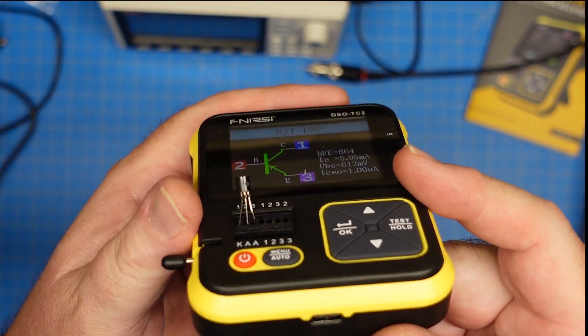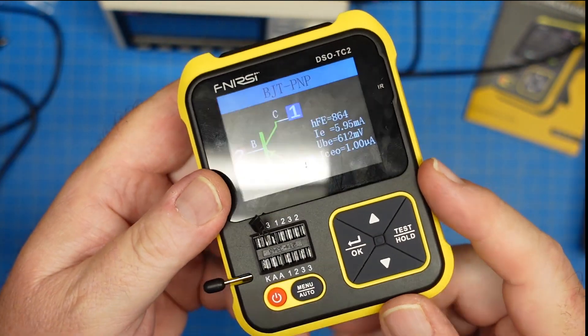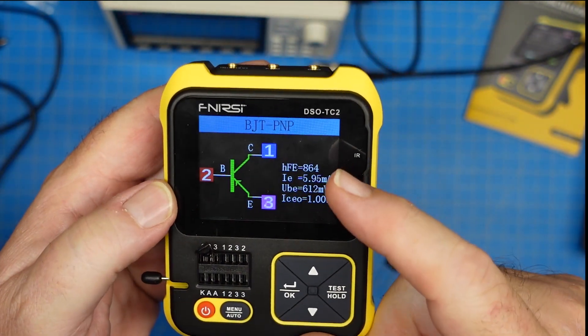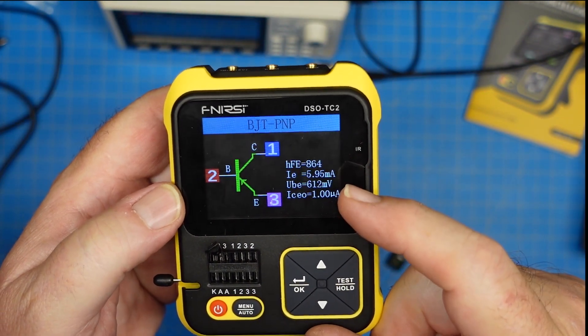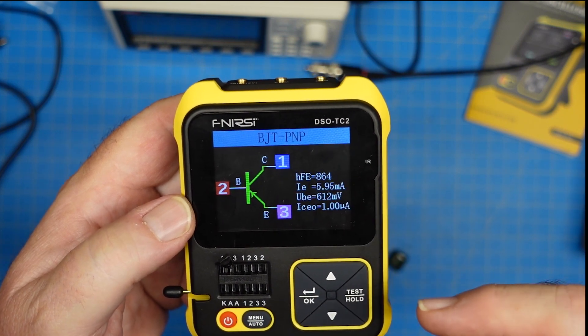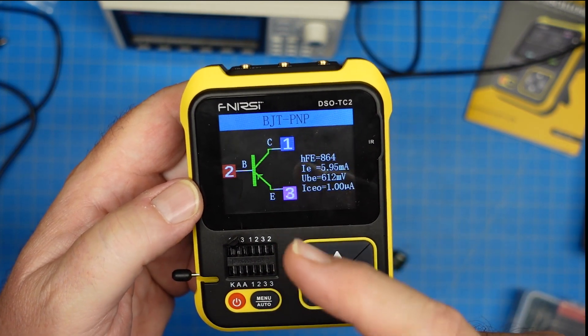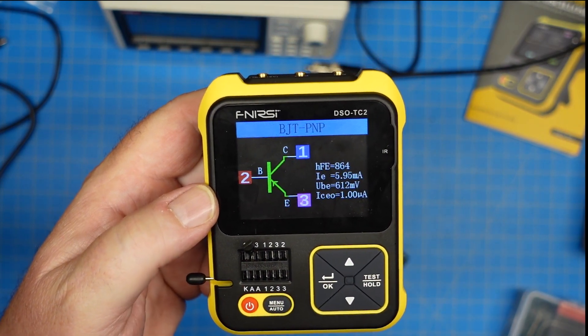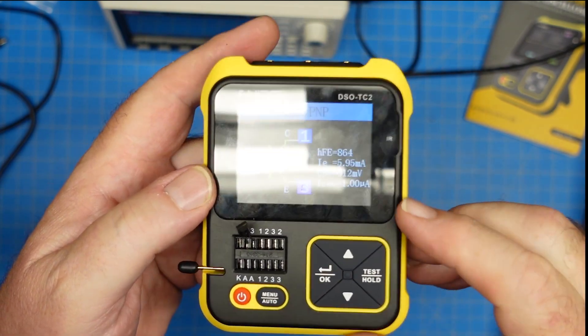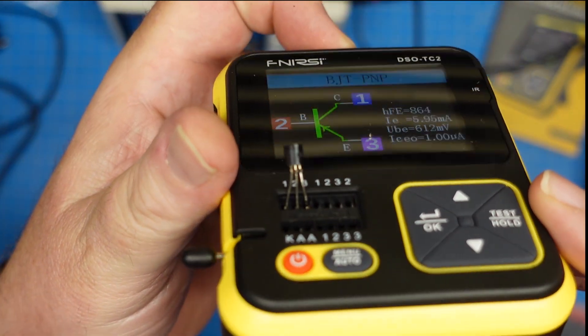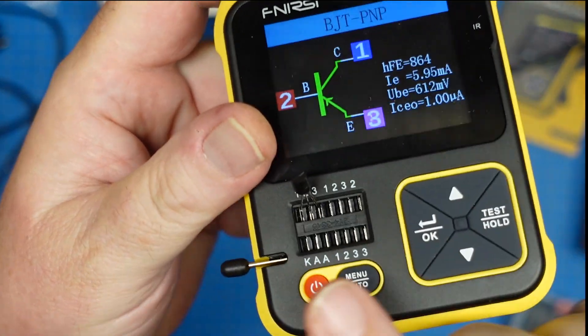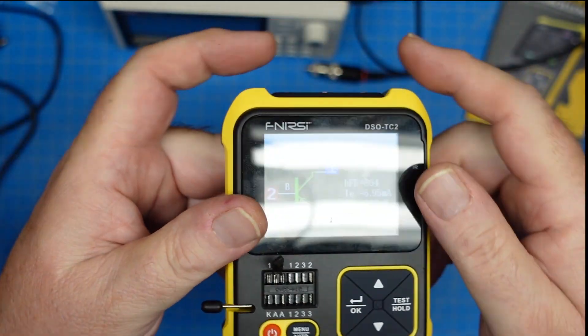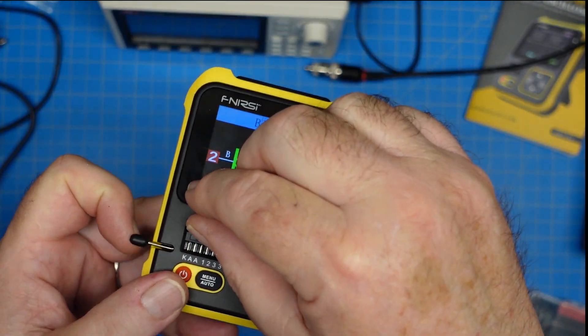So let me disconnect the oscilloscope part, and let's show some of the component testing features on this guy. So I've got a transistor stuck in the test ports over here. And this shows us all of our threshold values for this particular transistor, and what kind of transistor it is, where the base collector and emitter are at, what port is which one, and the values.